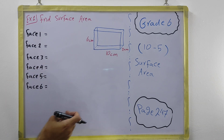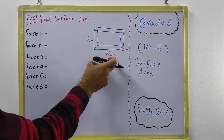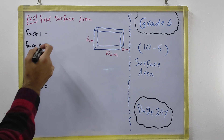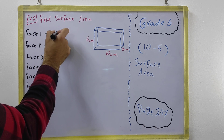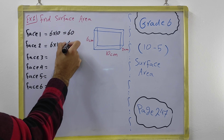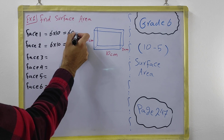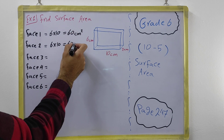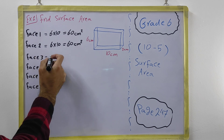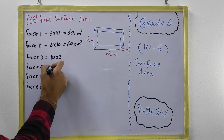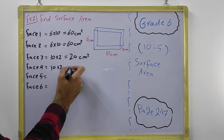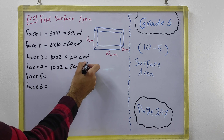You can assign the pairs as you like. For the first two faces we use 6 by 10 — 6 times 10 equals 60 cm². For the next two faces we use 10 and 2 — 10 times 2 equals 20 cm².